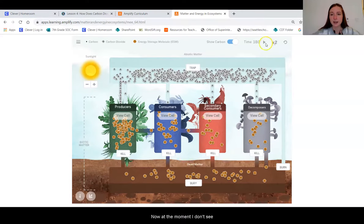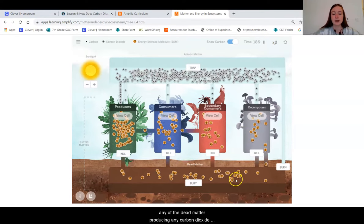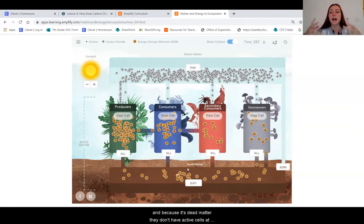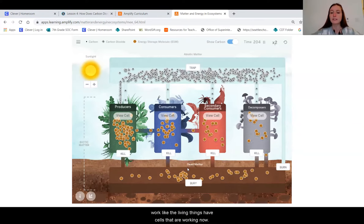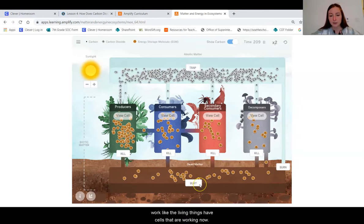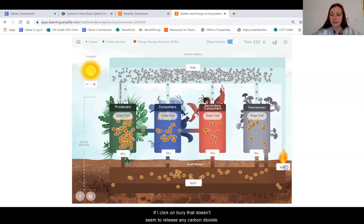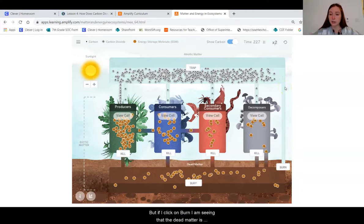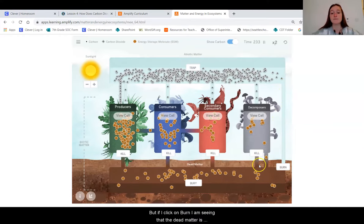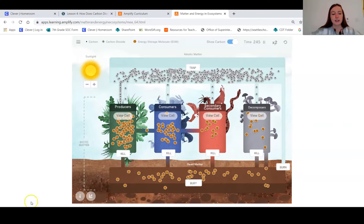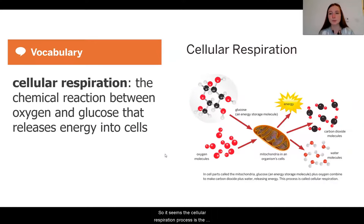Now, at the moment, I don't see any of the dead matter producing any carbon dioxide. And because it's dead matter, they don't have active cells that work, right? The living things have cells that are working. Now, if I click on bury, that doesn't seem to release any carbon dioxide. Ah, but if I click on burn, I am seeing that the dead matter is also capable of releasing carbon dioxide. Interesting. So it seems this cellular respiration process is the thing that is creating this carbon dioxide that gets into the ecosystem.